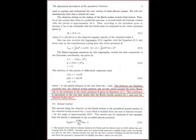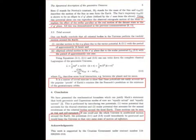The observer can therefore conclude that the celestial bodies perform real circular orbits around the static Earth due to the existence of the vector potential A given by equation 3.1. This conclusion is equivalent to the one that claims that the Earth rotates around the z-axis and the celestial bodies don't. Using this potential alone one can reproduce the observed retrograde motion of the Mars or explain the effect of the stellar parallax as the real motion of the distant stars in the x-y plane.